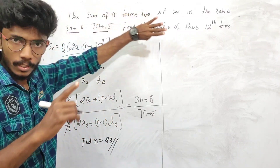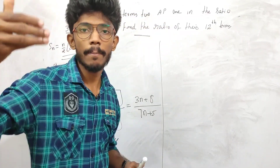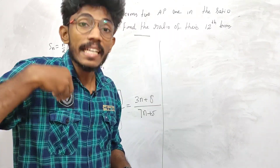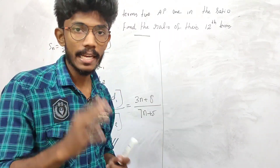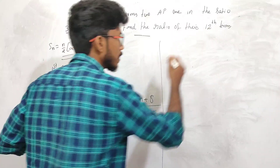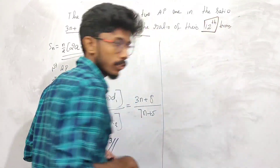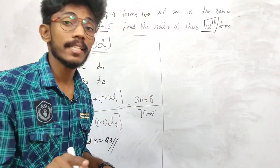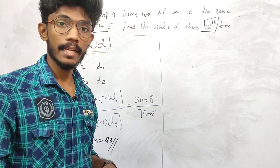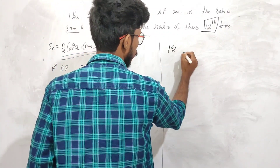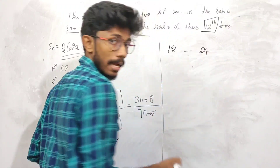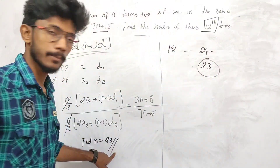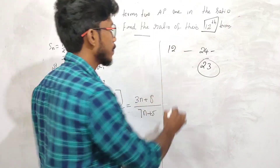We use the sum of two different APs in a ratio. We will take a particular substitution and apply it to the sum ratio. We need to substitute a suitable value of n so that the sum ratio gives us the ratio of the 12th terms.